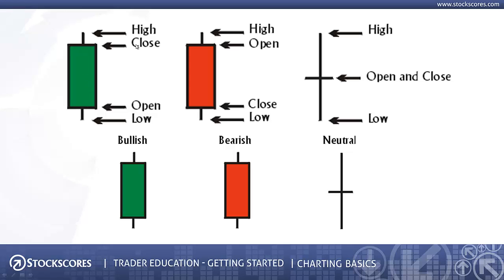The candle is green if it closes above where it opened, and red if it closes below where it opened. So you can start to get a sense of how the stock was moving through the trading day by looking at the candle. If you have a red candle, the stock was generally moving down and closed lower than it opened — we call those bearish candles, bearish being a negative connotation. A bullish candle is a green one, meaning the buyers were in control through that period. Bearish means the sellers were in control. Neutral means it basically closed on its open, and that's why we don't have any color — it's just a little cross. They call this a doji.